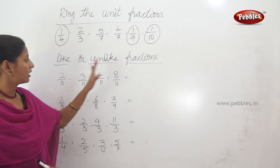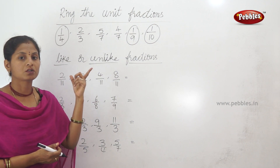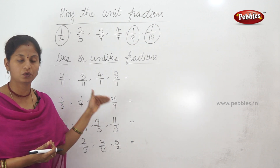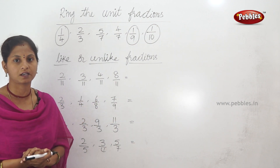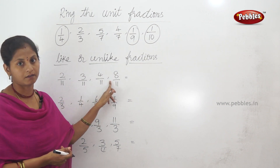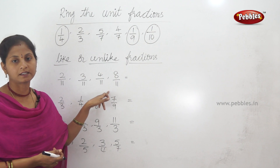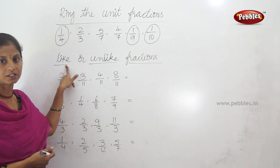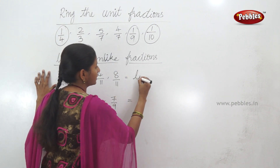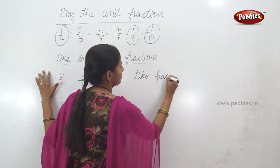Next: is this a like or unlike fraction? The denominator is the same — denominator alone has one number. 2 by 11, 3 by 11, 4 by 11, 8 by 11. Denominators are the same — like fractions. So this fraction is a like fraction.